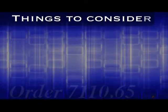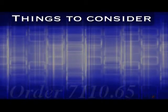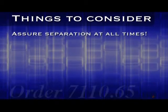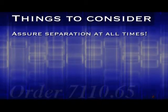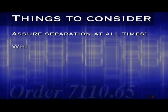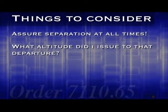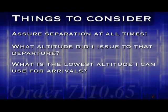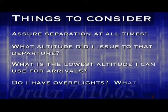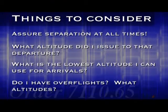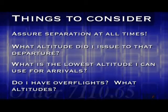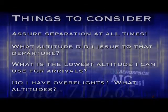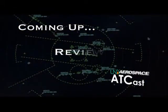These are just a few examples you might encounter. Whatever the situation, exercise good judgment and assure separation at all times. The key is to think ahead: what altitude did I just issue to that departure, and consequently, what is the lowest altitude I can use for arrivals? Do I have any overflights, and what altitudes are they at? How will that affect the altitudes I can use for other traffic?